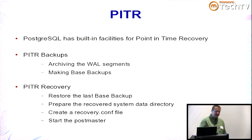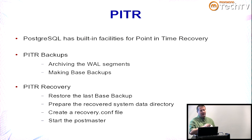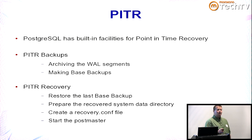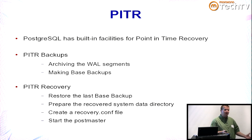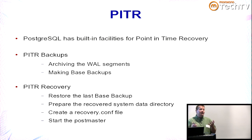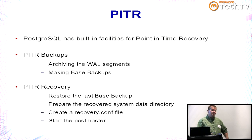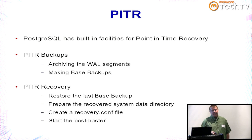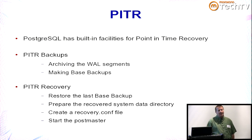For a point-in-time recovery, you restore the latest base backup, do some preparation in the system data directory, and create a file called recovery.conf. You tell recovery.conf where to find the WAL segments and to what point in time to recover. Then you start the postmaster — it finds recovery.conf, rolls into recovery mode, and when finished renames it to recovery.done and comes online. It's a fairly straightforward process.